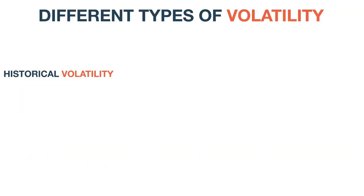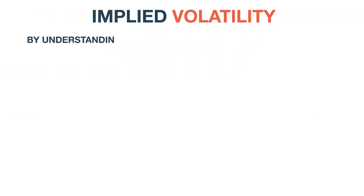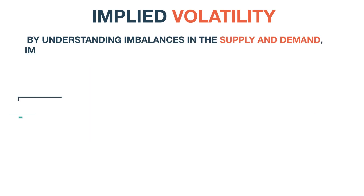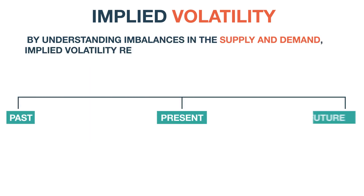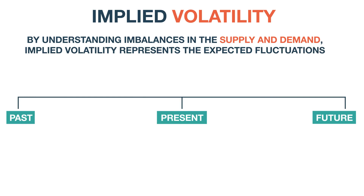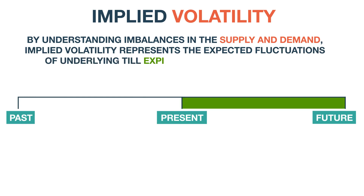Another type of volatility that is extensively used in options trading is implied volatility. By understanding imbalances in the supply and demand, implied volatility represents the expected fluctuations of the underlying security till the expiration of the option contract.